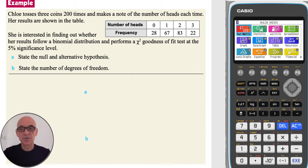In this question, Chloe tosses three coins 200 times and makes a note of the number of heads each time. She is interested in finding out whether her results follow a binomial distribution.